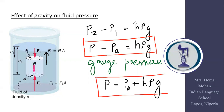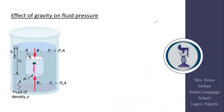So the pressure at a depth is greater than the atmospheric pressure by the quantity hρg. This difference in pressure when gravity is considered is what we call gauge pressure. As you move within the liquid, the pressure does not stay as atmospheric pressure — it increases by hρg. This is the modification to Pascal's law in the presence of gravity.